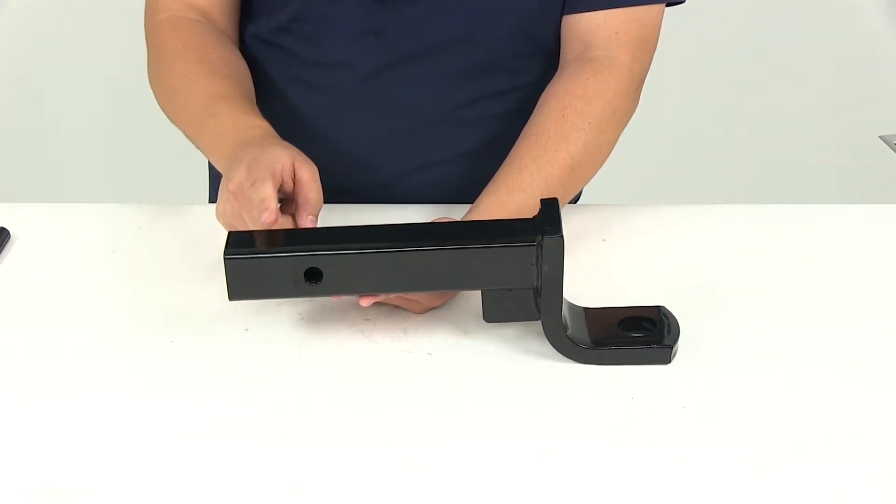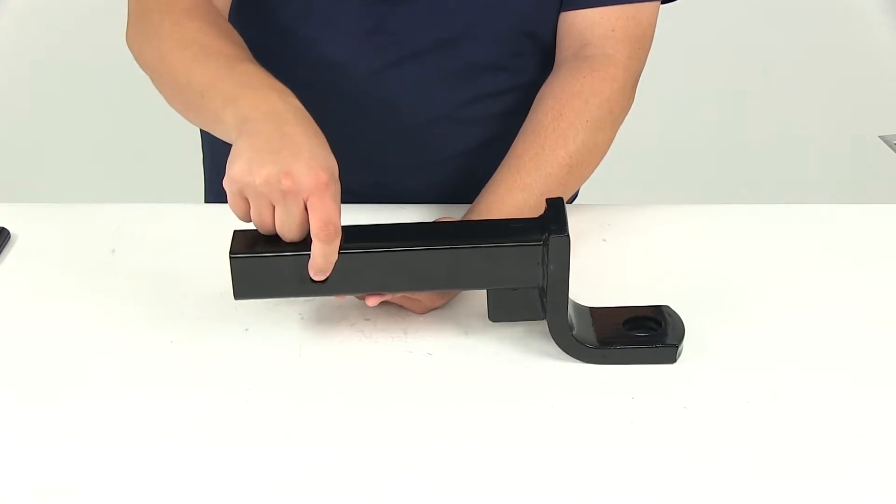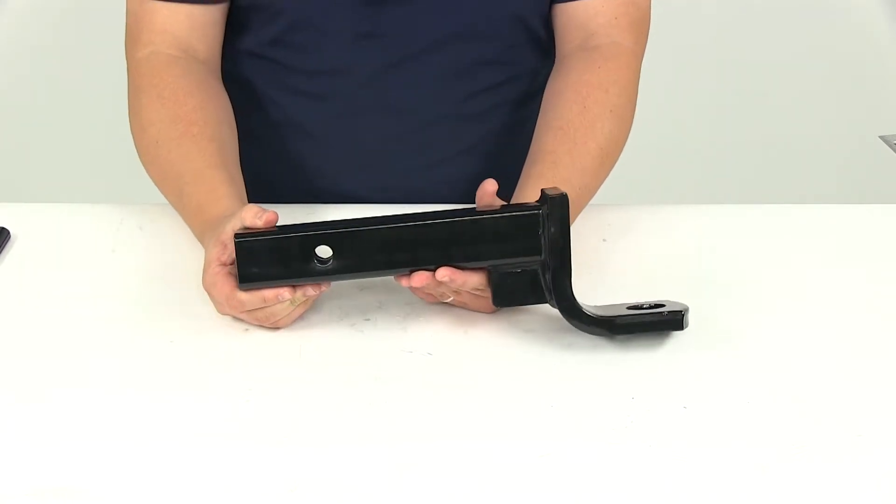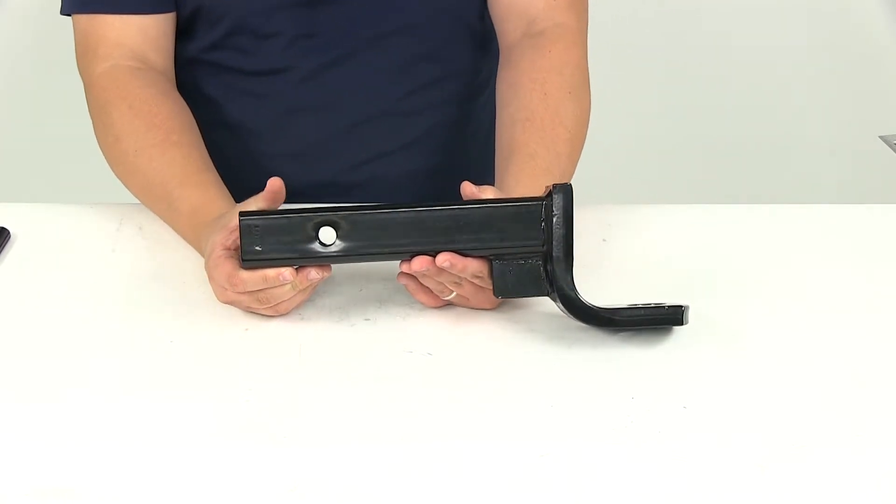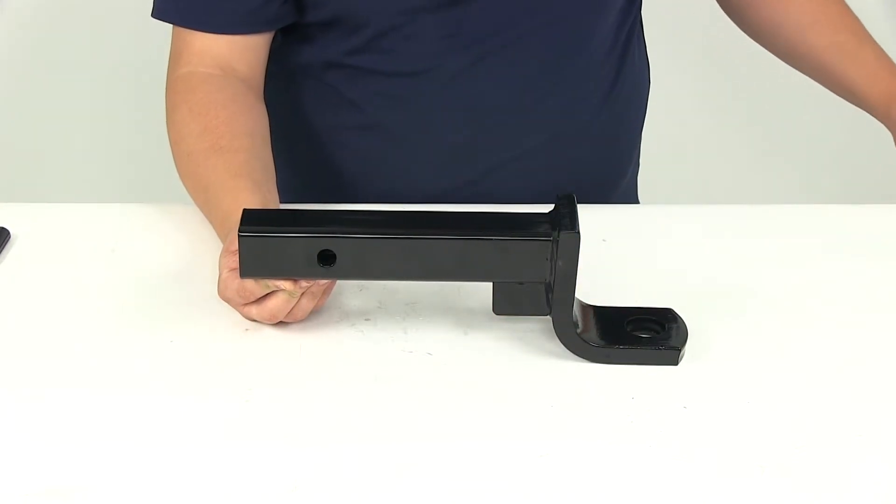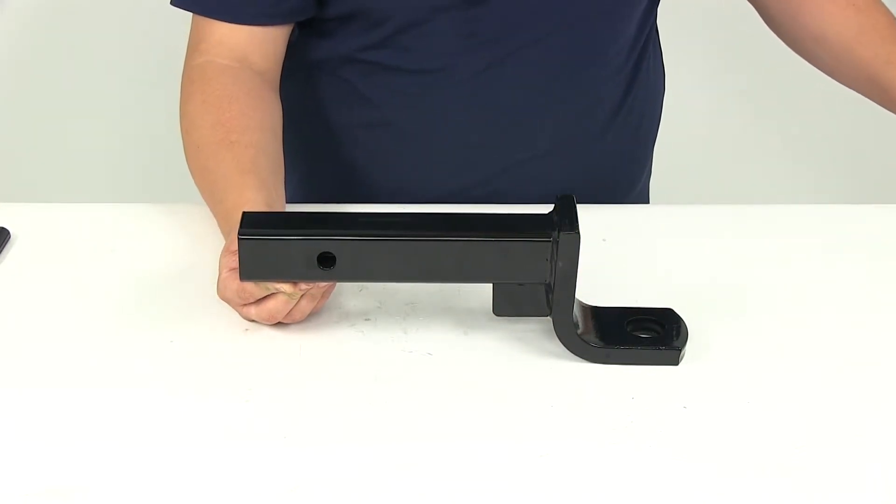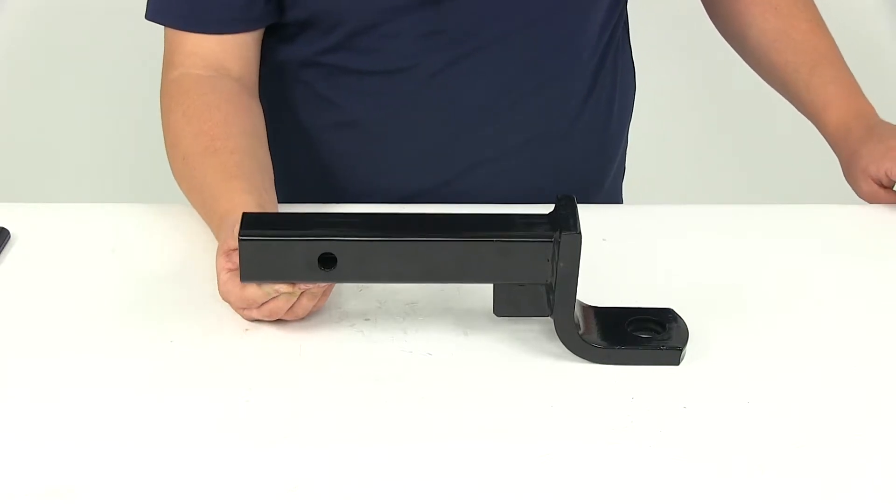This portion here is going to be the portion that slides into our hitch. We're going to push it in until we get our pinholes to line up and then we'll need to install a hitch pin and clip or a hitch pin and lock. Those are going to be sold separately. You can refer to our website, type in part number PC3 and it's going to refer you to a 5 eighth inch pin that comes with a clip.